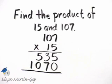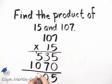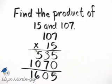And now what do we do? We add these partial products. 5 and 0, that's 5. 3 and 7 is 10. Carry the 1. 5 and 1 is 6, and then 1. What is the product of 15 and 107? It is 1,605.